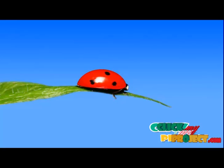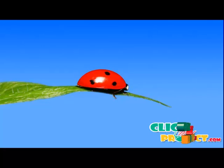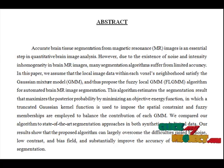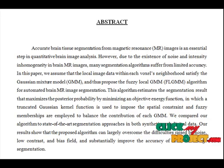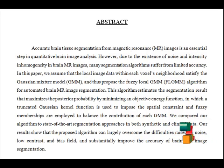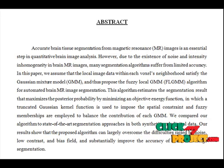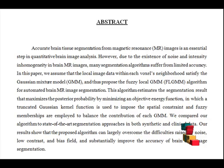Welcome to ClickMeProjects.com. Let's discuss the Fuzzy Local Gaussian Mixer Model for MR Brain Image Segmentation. Accurate brain tissue segmentation from MR images is an essential step in quantitative brain image analysis. Due to the existence of noise and intensity inhomogeneity in brain MR images, many segmentation algorithms suffer from limited accuracy.